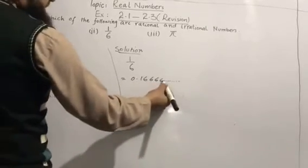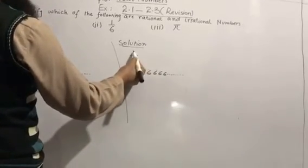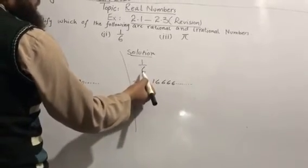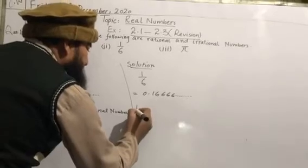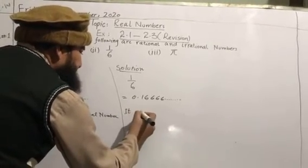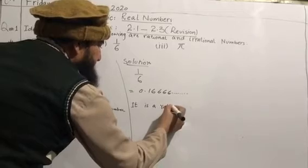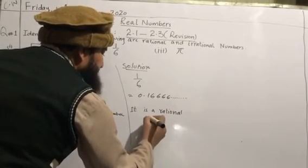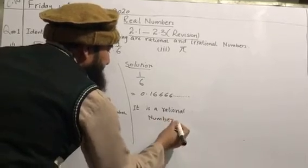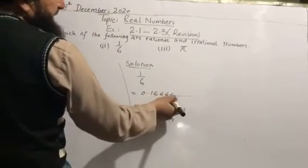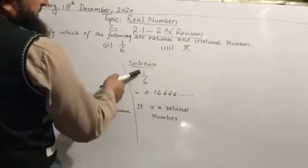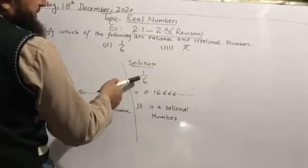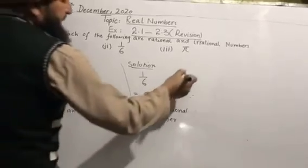This shows that 1/6 is a rational number because it is a recurring decimal and is in p/q form. Since it is in p/q form, it is a rational number.